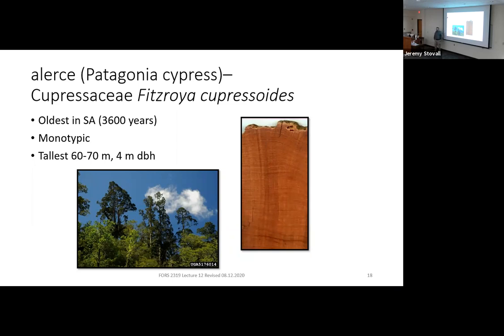Fitzroya is also monotypic — it's the last living member of the Fitzroya genus, with no other similar species left anywhere on the planet. It can reach over 220 feet in height and over 13 feet in DBH, so it can get really large and really old. You can think of it as parallel in some ways to our coastal redwood, but in South America.